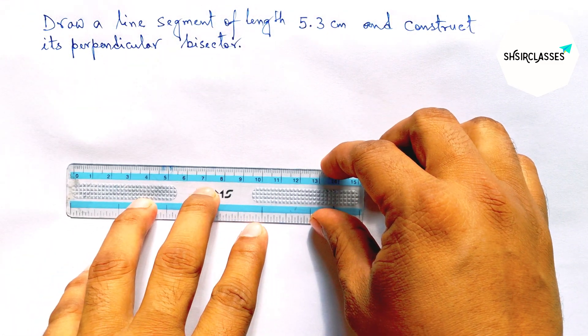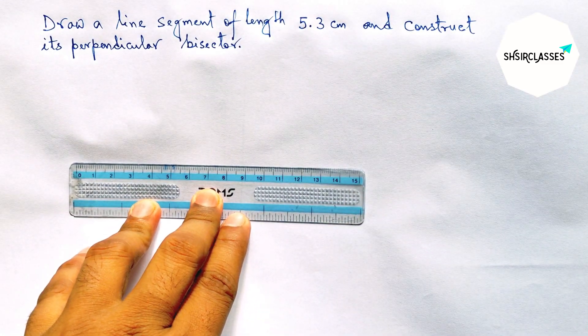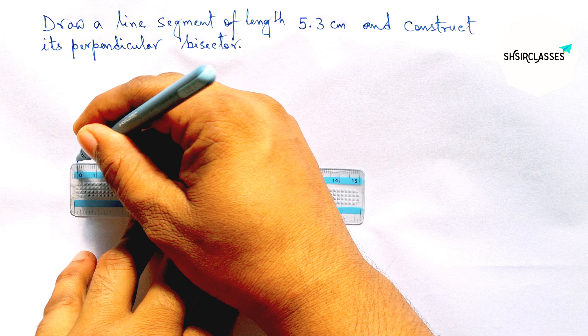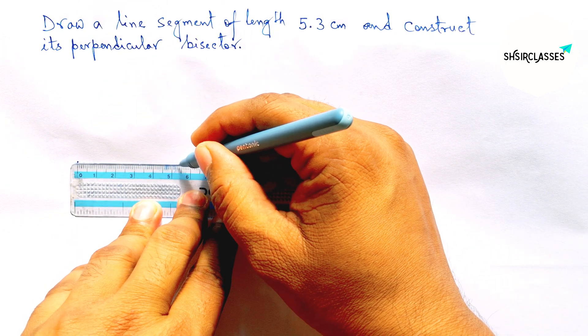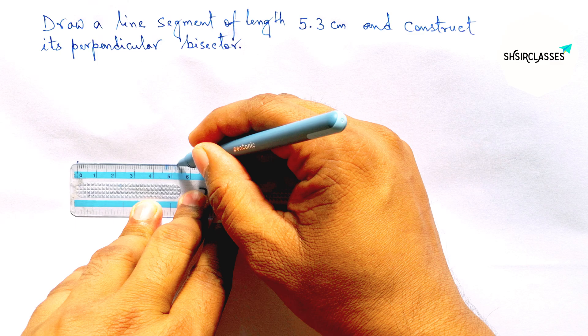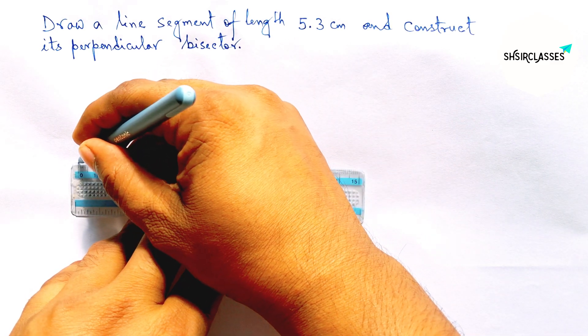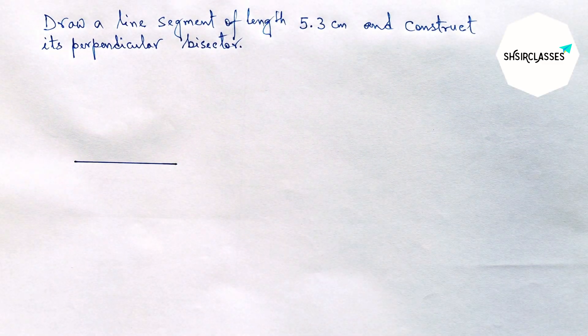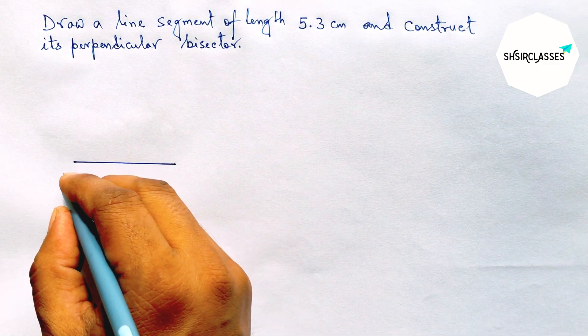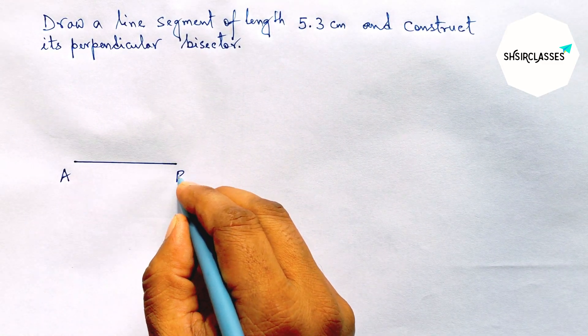First of all, let us draw a line segment of length 5.3 centimeters. So here 5 and counting 3, this is 5.3 centimeters. Drawing a line segment of length 5.3 centimeters and labeling it A and B.